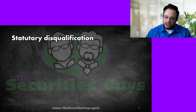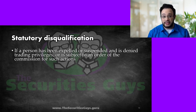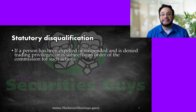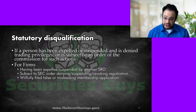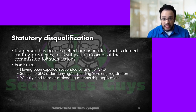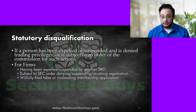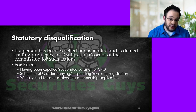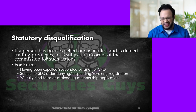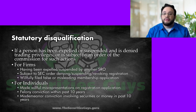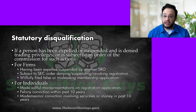Statutory disqualifications: if any person has been expelled or suspended, or denied trading privileges, or is subject to an order of the SEC — the Securities and Exchange Commission — that is a disqualification. For firms, having been expelled or suspended by another SRO — another self-regulatory organization — such as the MSRB, FINRA isn't likely to let you in. Being subject to an SEC order denying, suspending, or revoking registration also qualifies. Willfully filing false or misleading membership applications — that's lying — is a disqualification. Don't lie on these applications. Felony conviction in the past 10 years or a misdemeanor involving securities or money in the past 10 years applies as well.